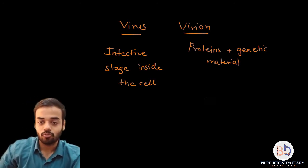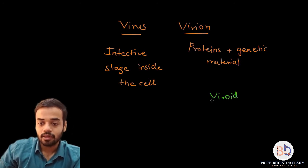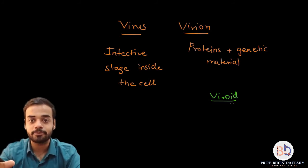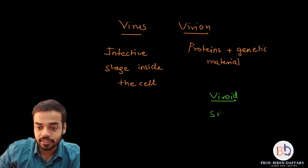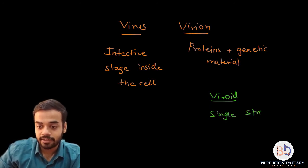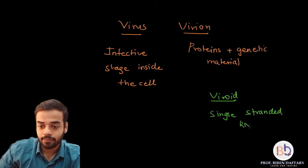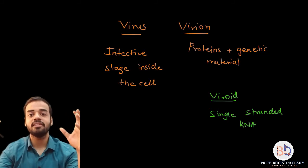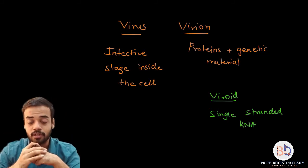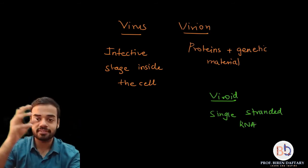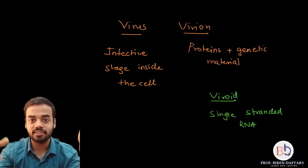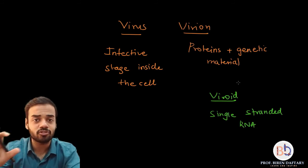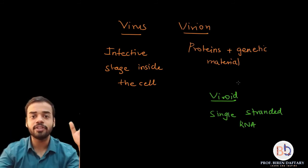Now let us come to the third word: viroid. A viroid basically doesn't have any protein surrounding it, it doesn't have any capsule — it is just made up of single-stranded RNA. Viroids cause diseases in higher plants. Out of these three, the smallest is obviously the viroid, because it is just a single-stranded RNA with no protein covering.